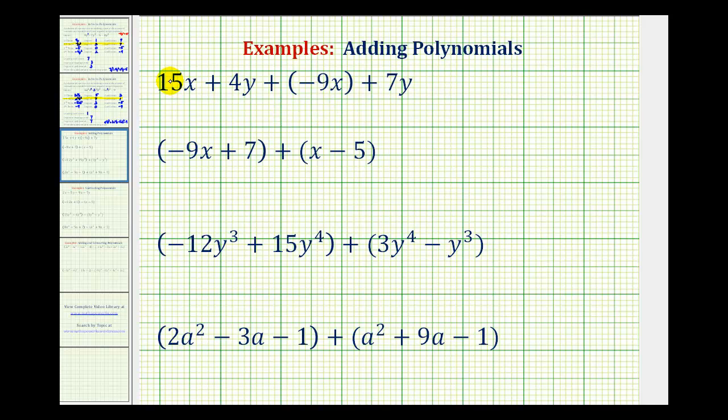So for example, 15x and negative 9x are like terms. They both contain one factor of x, and 4y and 7y are like terms because they contain one factor of y. To combine or add like terms, we add the coefficients, and the variable factor stays the same.